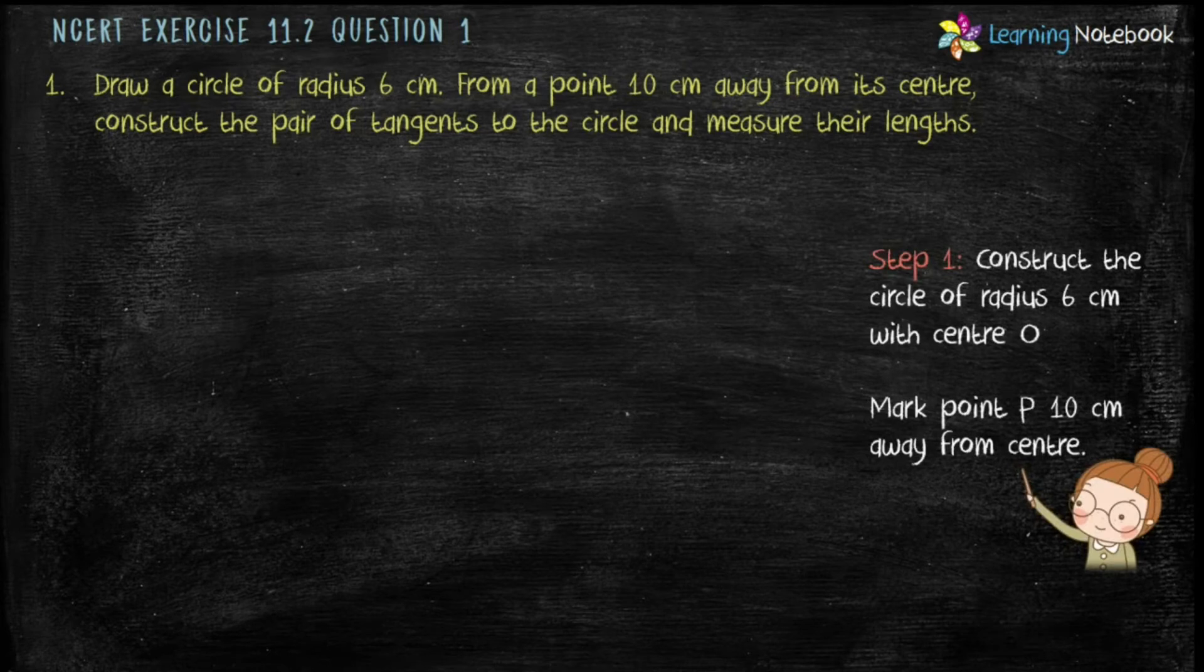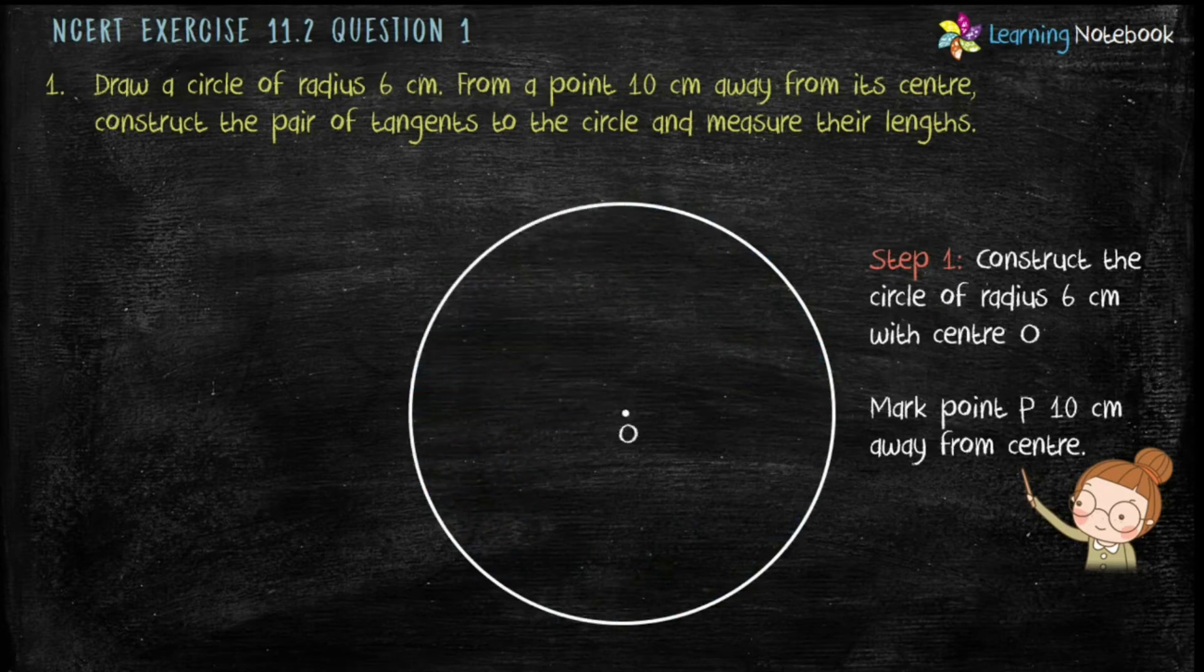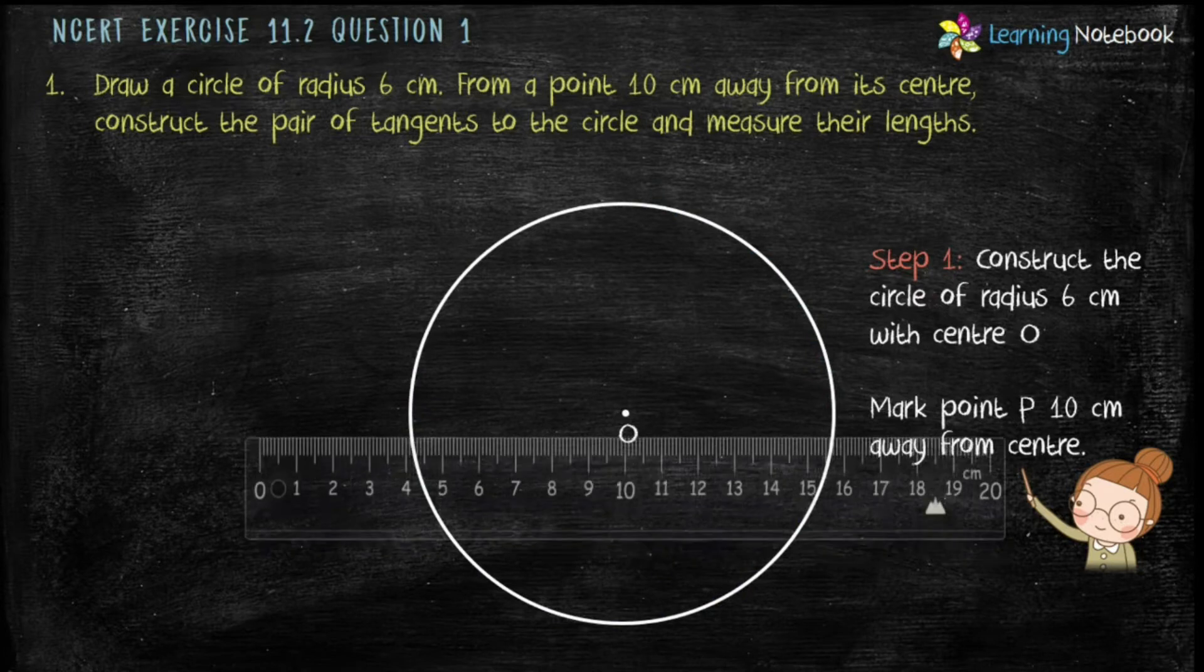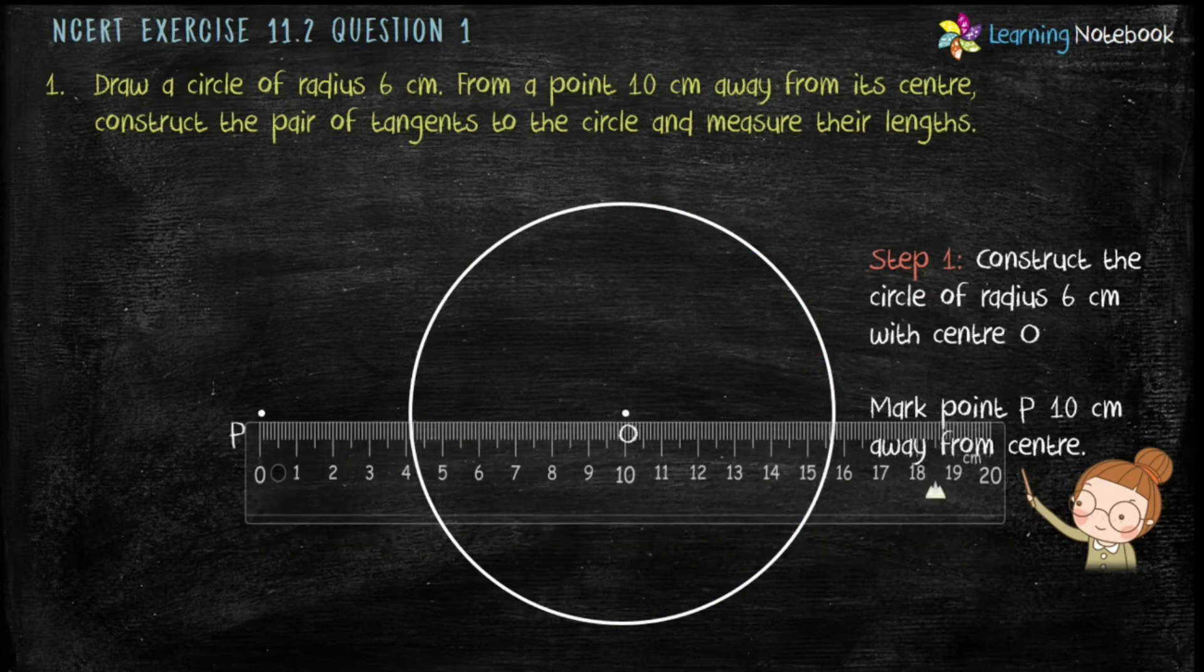In step 1, construct the circle of radius 6 cm with center O. Then mark point P 10 cm away from center using a ruler.